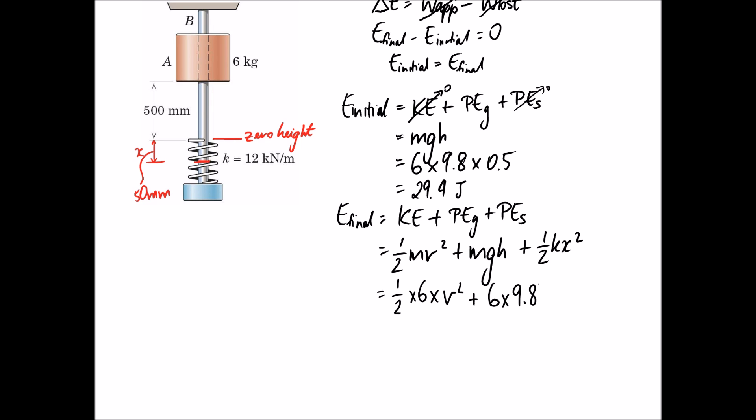We need to measure the height from our zero height line. Using this reference, we measured to the bottom of the block before, so after this block falls down and compresses by 50 millimetres, it's going to have a height that's negative because it's below the zero height line, negative 0.05, because we've compressed it by that 50 mill, which is 0.05 in metres.